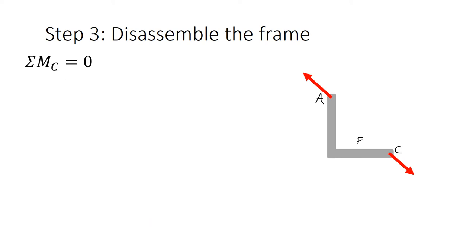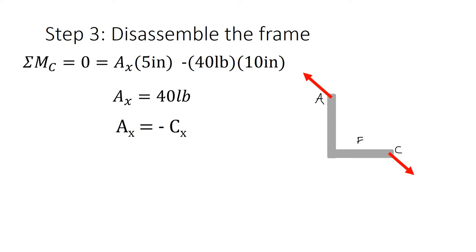Now we're going to take a moment at C so we can solve for Ax, which we were unable to do when analyzing the entire structure. Plugging in everything we know into the moment equation, we have Ax times 5 inches and 40 pounds times 10 inches. If we solve this, we get Ax equals 40 pounds. Since Ax equals negative Cx, we get Cx equals negative 40 pounds.